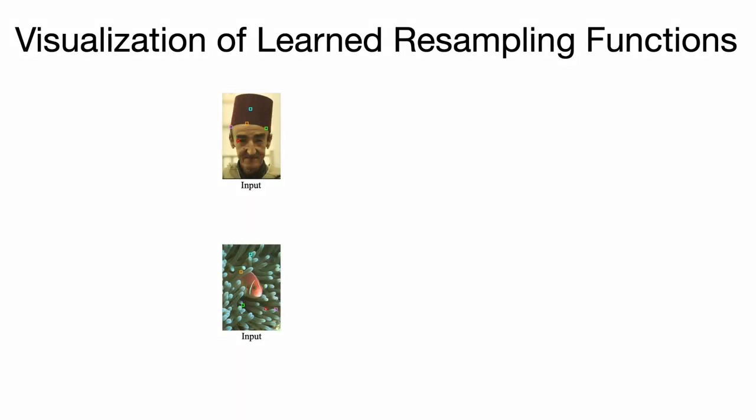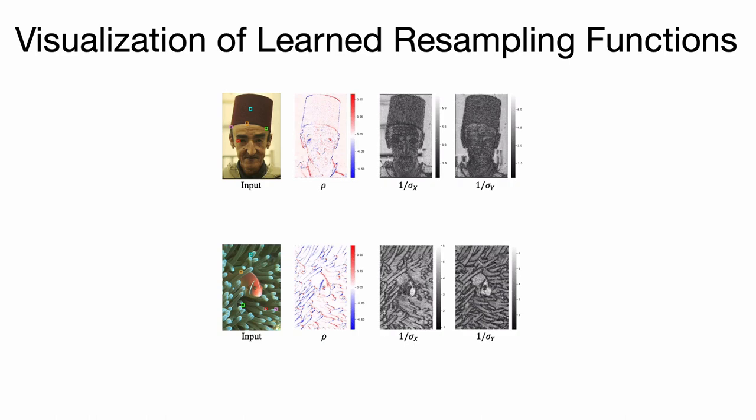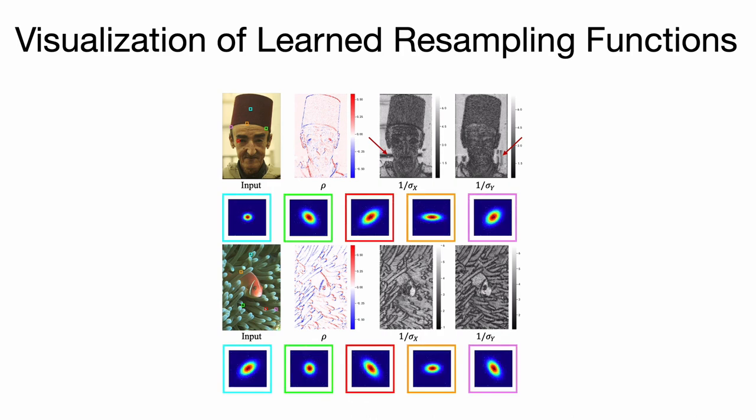Furthermore, we visualize the learned hyperparameters and corresponding resampling functions. The shapes of learned resampling functions are well adapted to corners, flat surfaces, and edges with various orientations. This validates the effectiveness of extracting structural priors in a data-driven way.